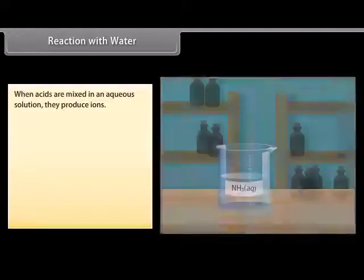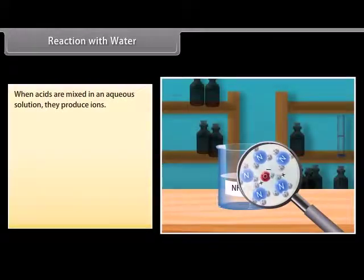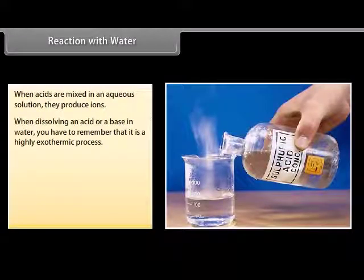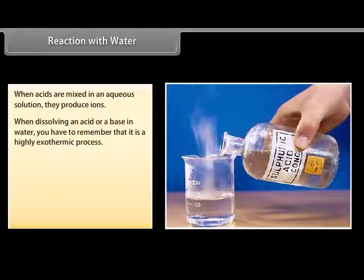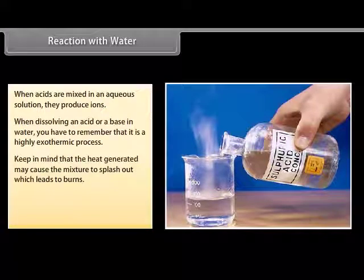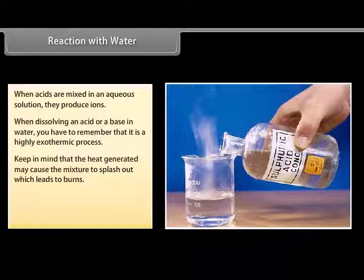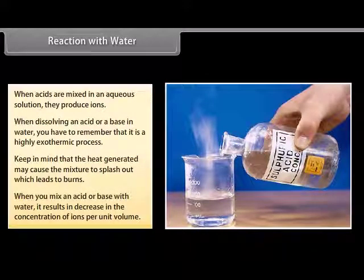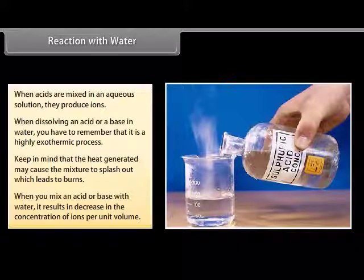When acids are mixed in an aqueous solution, they produce ions. When dissolving an acid or a base in water, you have to remember that it is a highly exothermic process. While adding water to a concentrated acid, the heat generated may cause the mixture to splash out, which leads to burns and may cause the glass container to break due to excessive local heating. When you mix an acid or base with water, it results in a decrease in the concentration of ions per unit volume. This process is called dilution and you get a diluted acid or base.